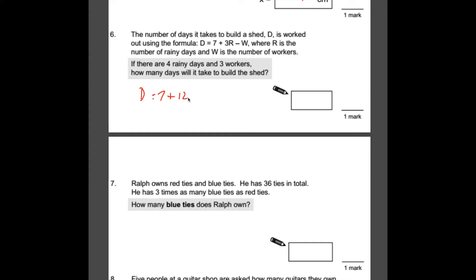Minus W, which is the number of workers. So there are three workers, so that's minus 3. All we need to do now is solve D. So 12 minus 3 is 9 plus 7 is 16. So it will take 16 days to build the shed.